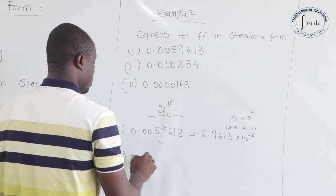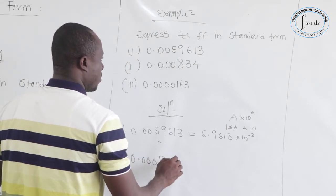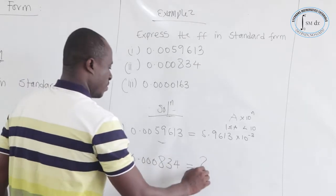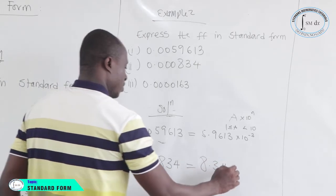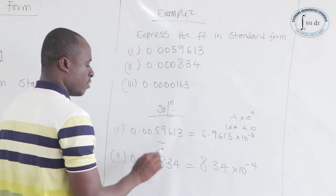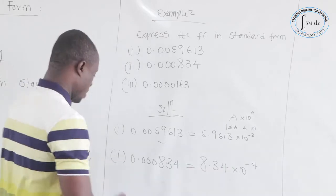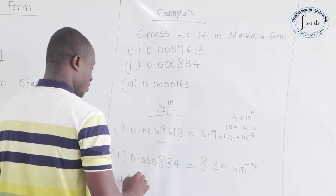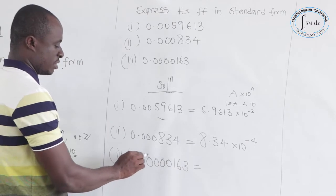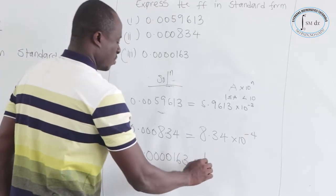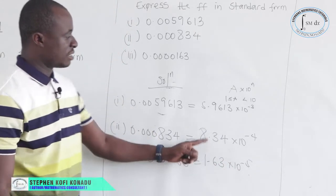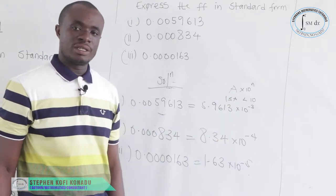The second one is 0.000834. Moving the point: 1, 2, 3, 4 — we get 8.34 times 10 to the power negative 4. The third one: moving 1, 2, 3, 4, 5 — we have 1.63 times 10 to the power negative 5. Both results are within the required range of A being greater than or equal to 1 and less than 10.